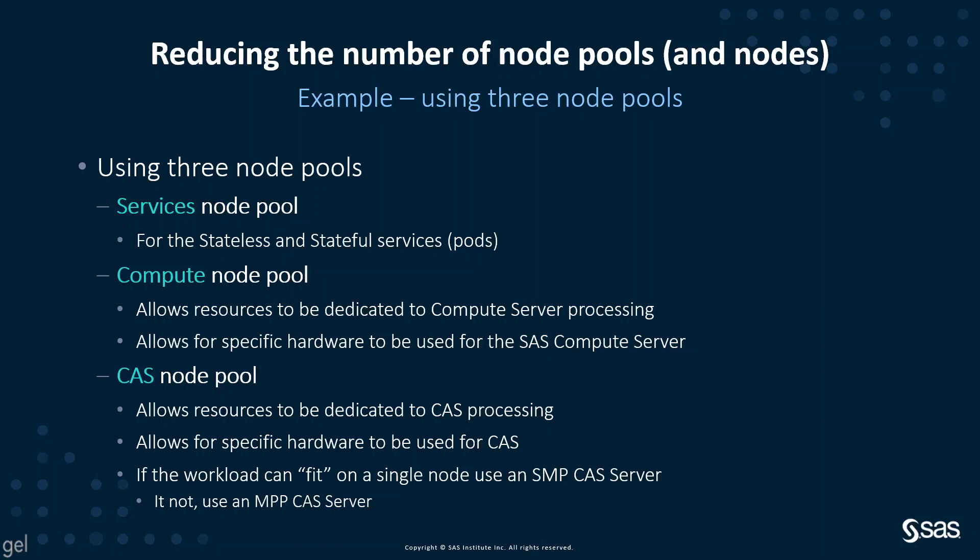The second example uses three node pools. In this model, we have a services node pool for stateless and stateful services, a compute node pool which allows resources to be dedicated to the programming or SAS Compute Server processing and allows specific hardware to be used for compute pods, and the CAS node pool as before, which allows resources to be dedicated to CAS processing with specific hardware. If the workload fits on a single node we use an SMP CAS server; otherwise, an MPP CAS server.